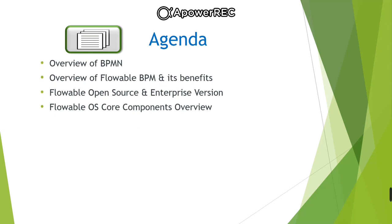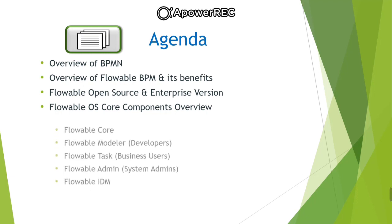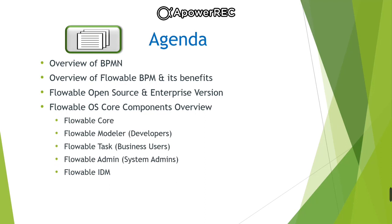Let's summarize the agenda of this video in snapshot, where we will be discussing the overview of business process model and notations, then overview of Flowable BPM and its benefits to understand why we should use Flowable as a first choice BPM tool. After that we will have a quick comparison of Flowable open source and enterprise version. And in the last, we will be discussing the core components of Flowable open source — Flowable core, Flowable modeler, Flowable task, Flowable admin and Flowable identity management.